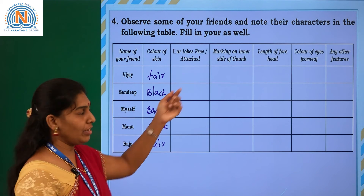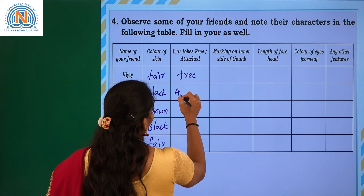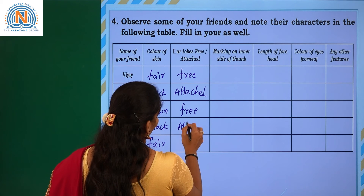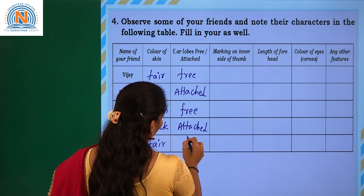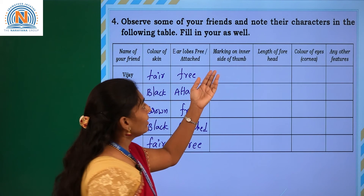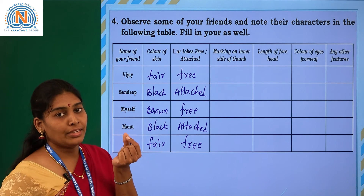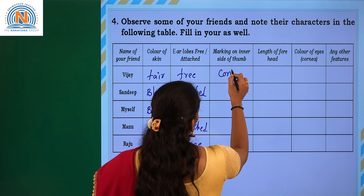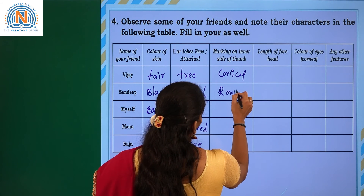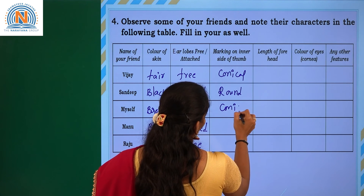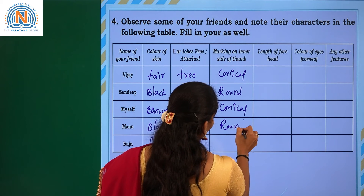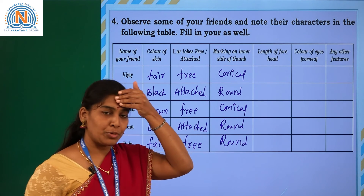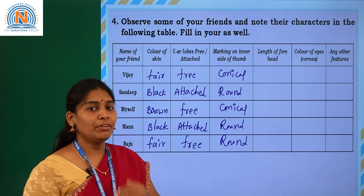For earlobes — attached or free: free, attached, free, attached, free. For marking on the inner side of the thumb, some people have a round or conical shape. So: conical, round, conical, round, round.